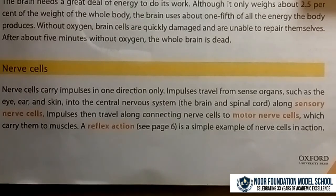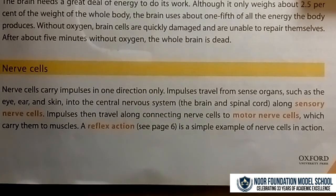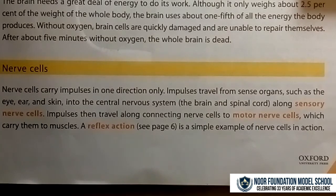Our next topic is nerve cells, from Chapter 1: The Nervous System. Nerve cells carry impulses in one direction only. Impulses travel from sense organs — such as the eye, ear, and skin — into the central nervous system, which includes the brain and the spinal cord, along sensory nerve cells. Impulses then travel along connecting nerve cells to motor nerve cells, which carry them to muscles.